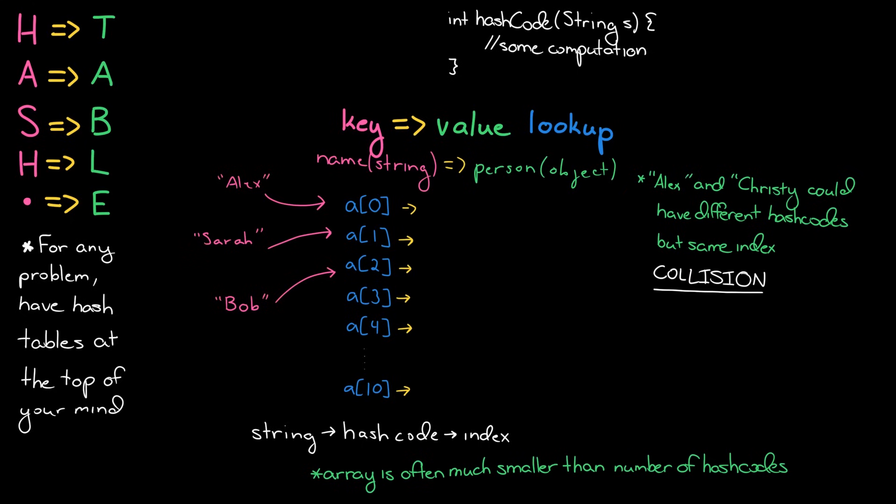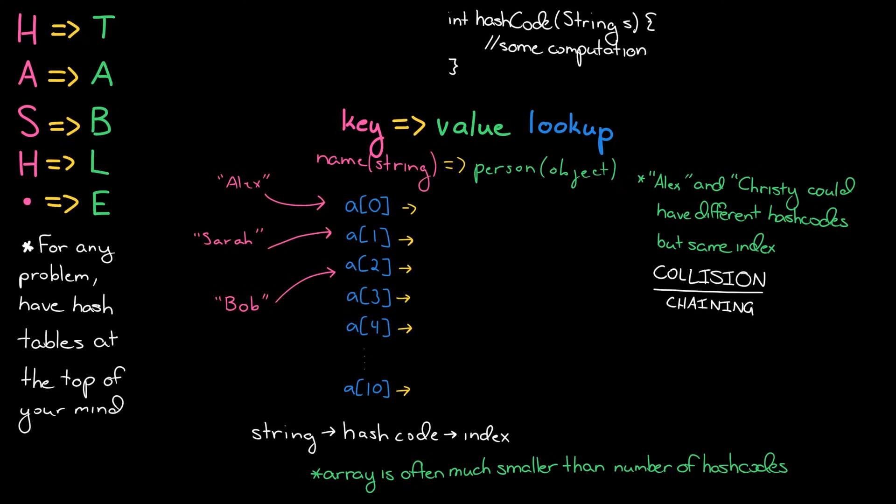There are different ways of resolving collisions and I really do encourage you to look this up on your own time. But I'll just talk about one of them which is called chaining. And chaining is possibly the most common one and it's very simple. What it basically means is just hey when there's collisions just store them in a linked list. So rather than this being an array of people it's actually going to be an array of a linked list of people.